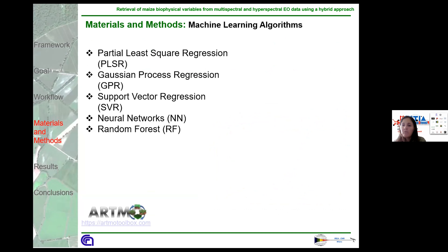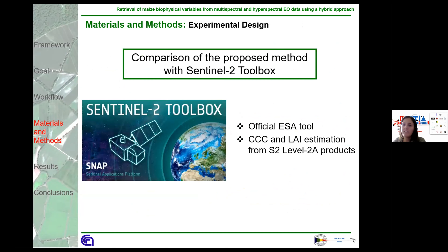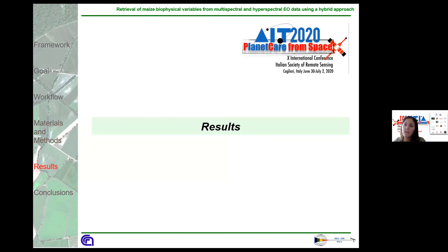The training phase was performed with different algorithms. Five machine learning regression algorithms were chosen and are listed here. The tests with these five algorithms were performed on each biophysical variable. The results obtained with the proposed method using the real Sentinel-2 dataset were compared with the results of the official ESA Sentinel-2 toolbox, which provides estimation of canopy chlorophyll content and LAI from Sentinel-2 Level 2A products. For each biophysical variable, the results of the best algorithm are reported.